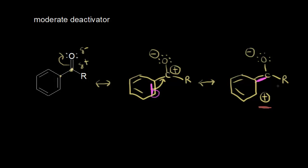Now let's think about a general way to recognize these moderate deactivators. Going back to this first drawing, we have an atom bonded to a benzene ring, and that atom has a pi bond to an electronegative atom — in this case, oxygen. That's the pattern you're looking for: a pi bond next to an electronegative atom will give you a moderate deactivator.